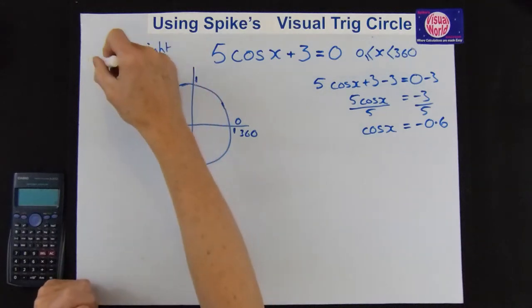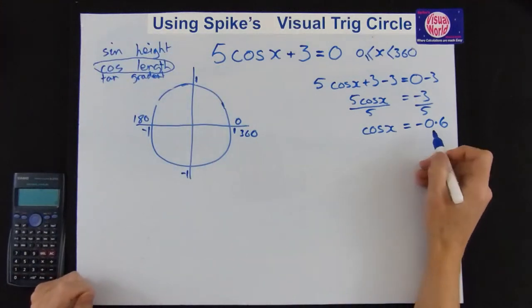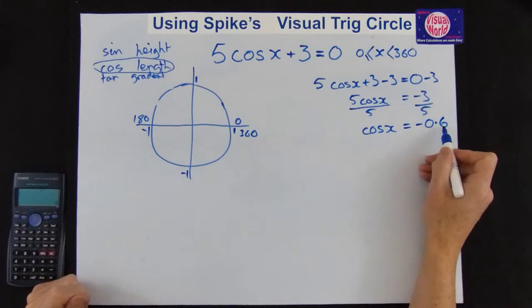In this case, we're doing the length. And the length is minus 0.6.